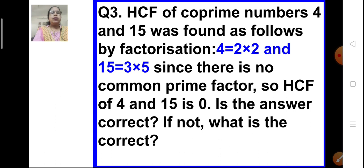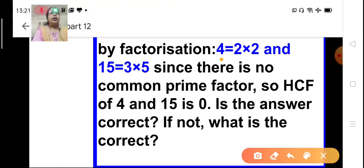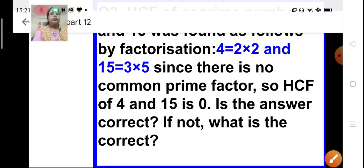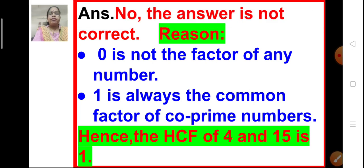Next, question number 4. The HCF of co-prime numbers 4 and 15 was found as follows by factorization: 4 is expressed as 2 × 2 and 15 is expressed as 3 × 5. The question states that since there is no common factor, their HCF will be 0 — is it right? No, because 0 is not a factor of any number. When two numbers do not have any common factor, they have 1 as the common factor. So the HCF of 4 and 15 will be 1, not 0.